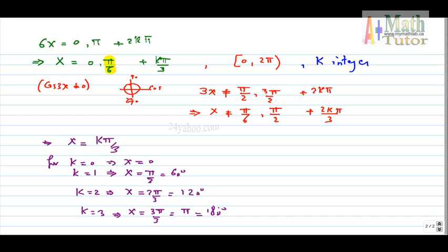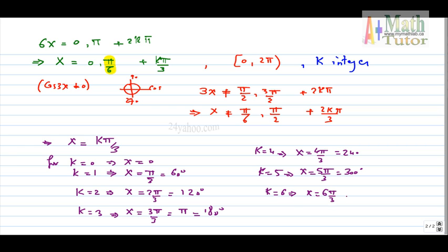I continue on, so I get k = 3, then x = π which is 180 degrees; then for k = 4, I get x = 4π/3 which is 240 degrees, this is included; for k = 5, I get x = 5π/3 which is 300 degrees; for k = 6, I get x = 2π and this is 2π not included, so I stopped right here.